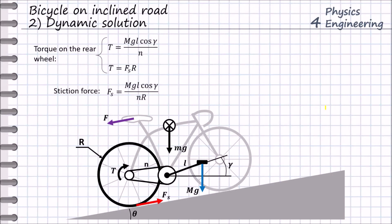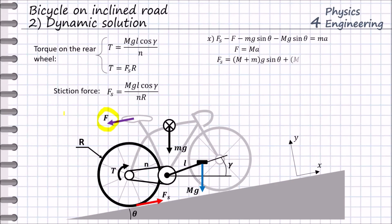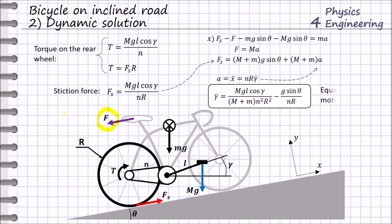Therefore the stiction force will now look differently. We define the coordinate system and write the dynamic equation according to Newton's second law. A force Fp appears acting on the bike seat, which will accelerate the cyclist forward up the hill, equal to the mass of the cyclist times the linear acceleration. With consideration of the stiction force and the relation between linear and angular acceleration of the pedal, we obtain the dynamic equation. Since this equation cannot be solved mathematically, we use numerical methods.